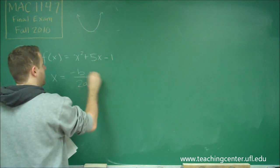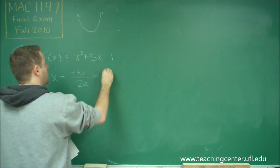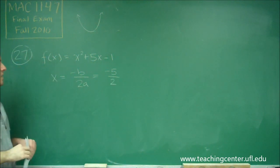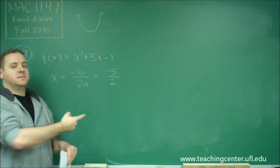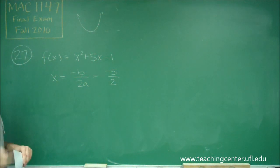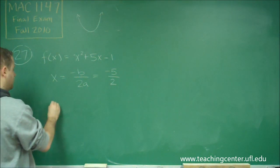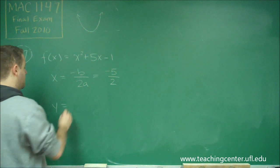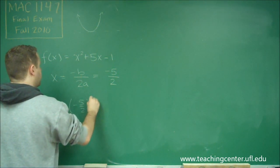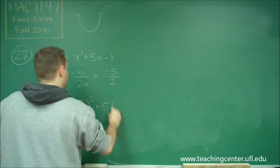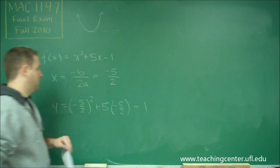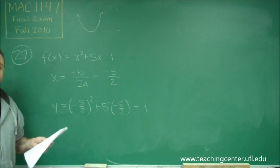In this case, for our function, we get negative 5 over 2. So the x value of our vertex is negative 5 halves. To find the y value, we just plug that in. Our y equals negative 5 halves squared, plus 5 times negative 5 halves, minus 1.